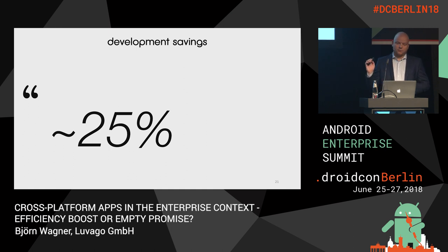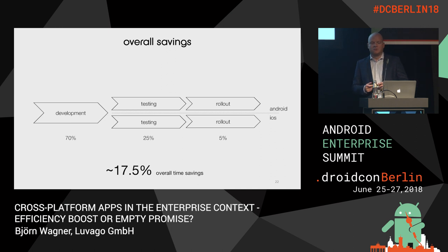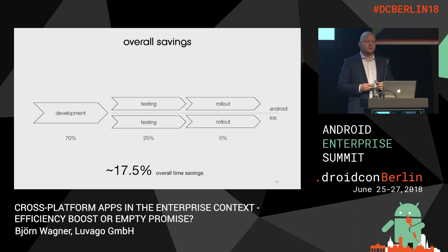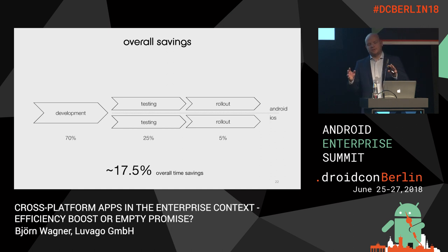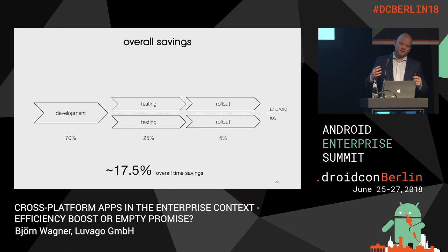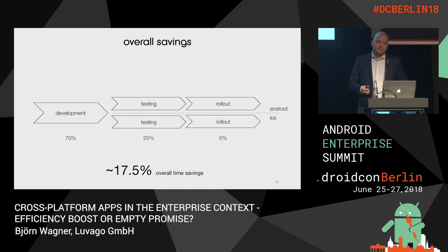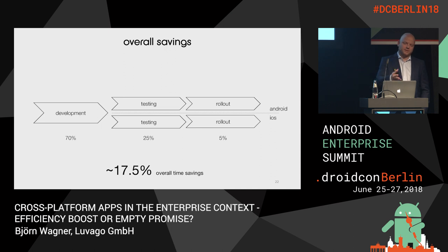Going back to the overall process — let's assume 70% of resources are spent on development, 25% on testing, and 5% on rollout. You can see those savings are actually narrowed down to about 17.5% of total effort. Please don't take these as absolute numbers — just look at your own processes, how you spend time, how your team is set up, how big your testing team is, and based on that get a rough number to make an economic decision about whether the framework makes sense.